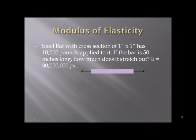Here's a little example. Steel bar, cross-section of one by one, so it's a one-inch square cross-section. It has 10,000 pounds applied to it. If the bar is 50 inches long, how much does it stretch out? Steel is either 30 million PSI or 29 million PSI. We talked about that rearranged formula where you could solve for deformation caused by an axial force. So deformation, my force is 10,000 pounds, my length is 50 inches, that's a one-square-inch cross-section, and the E for steel we are going to take as 30 million PSI. The deformation of this steel bar comes out to be 0.0167 inches.